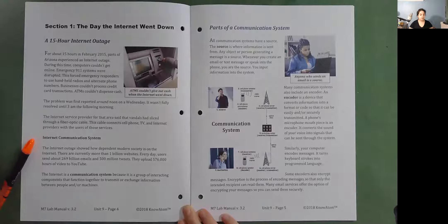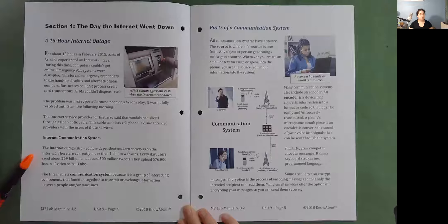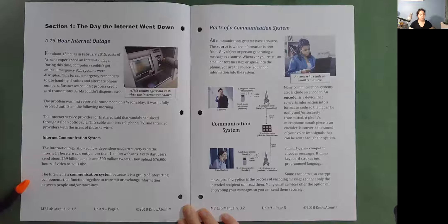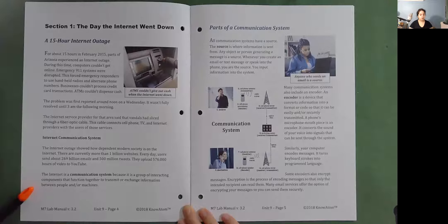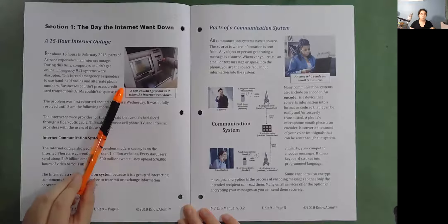Internet communication system. The internet outage showed how dependent modern society is on the internet. There are currently more than 1 billion websites. Every day, users send about 269 billion emails and 500 million tweets. They upload 576,000 hours of video to YouTube. The internet is a communication system because it is a group of interacting components that function together to transmit or exchange information between people and or machines. ATMs couldn't give out cash when the internet went down.